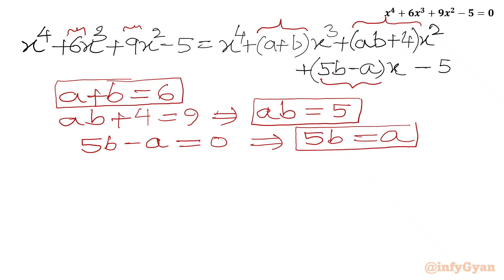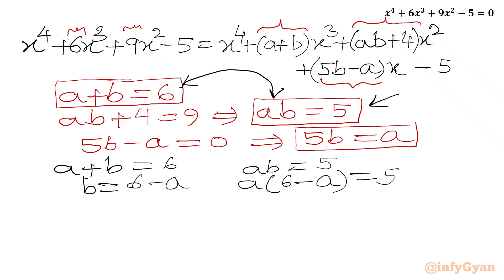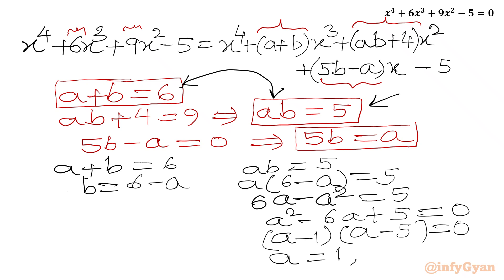Now we will solve the first and second equations. From the first equation, a + b = 6, so b = 6 − a. Substituting into ab = 5: a(6 − a) = 5, so 6a − a² = 5, or a² − 6a + 5 = 0. Factoring gives (a − 1)(a − 5) = 0, so a = 1 or a = 5.